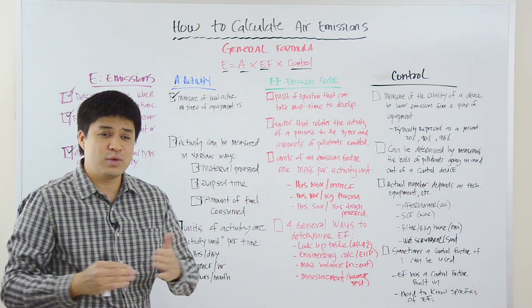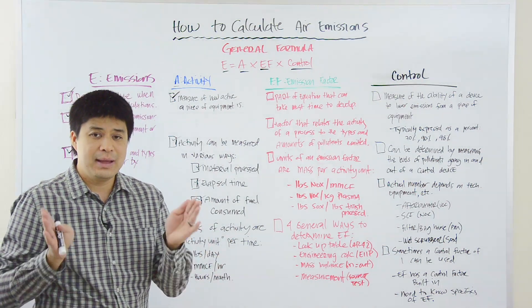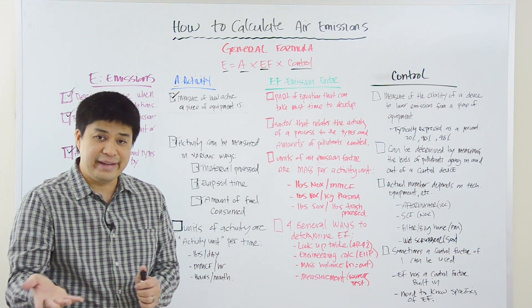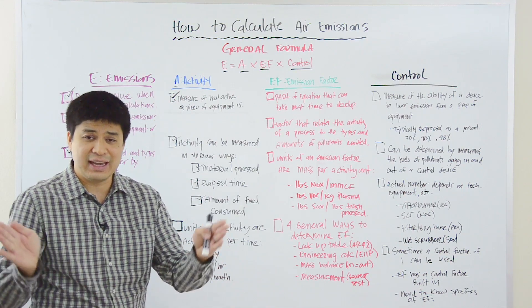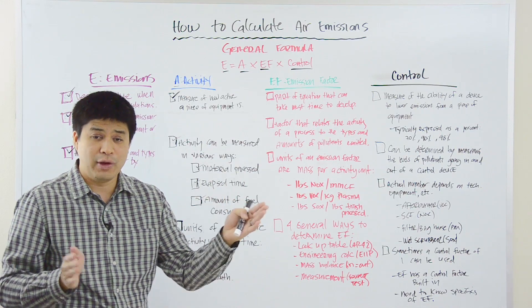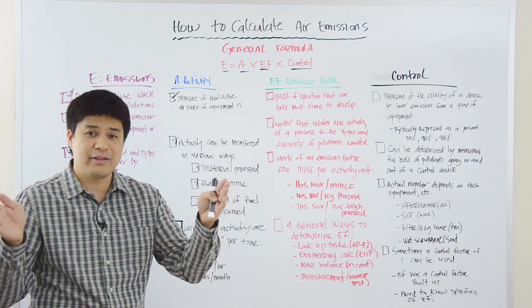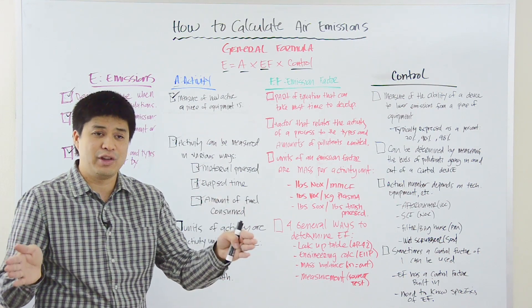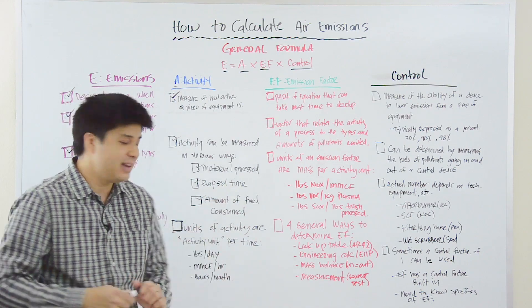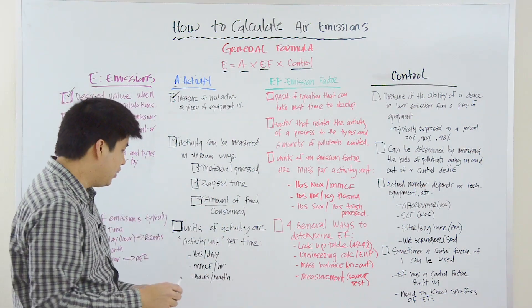So, if your unit of measure is one month, the activity would be how much fuel was consumed by this piece of equipment in that one month time period. In another case, if you're looking at emissions on an annual basis, and you want to know what's the emissions from this boiler on a per year basis, then you would look at the total amount of fuel consumed by that boiler over a one-year time period and then you would take that number to be the activity for that one-year period.